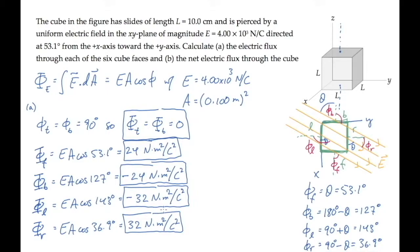So these are the electric fluxes through each of the six faces. Part b asks us to find the net flux, the flux we get if we add them all together. And we can see that they'll all add to zero. There's as much flux entering the cube as there is leaving, so the net flux is zero.